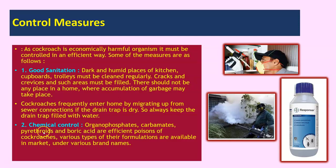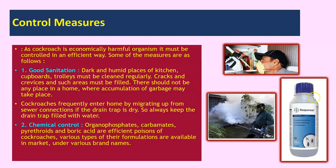The next method is chemical control, using organophosphates, carbamates, pyrethroids, and boric acid — these are efficient poisons for cockroaches. Various formulations are available in the market under various brand names. We also have pest control and fumigation treatments to get rid of cockroaches, and these chemical control formulations are available in the market to deal with cockroach problems at home.